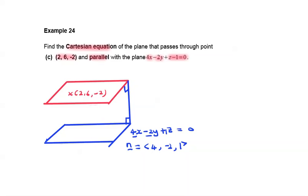So by referring to the plane equation R dot normal equals to A dot normal, we have (x, y, z) dot (4, negative 2, 1) equals to the point (2, 6, -2) dot normal (4, negative 2, 1).